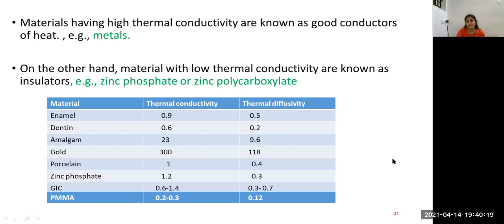In case of deep cavities, zinc phosphate which has a low thermal conductivity is used as a base. Here, the remaining dental thickness will be less. So when we use zinc phosphate, there will be low thermal conductivity. In case where dental thickness is sufficient, the dentin itself will act as a natural barrier.